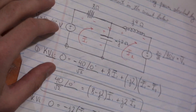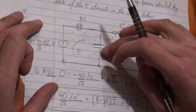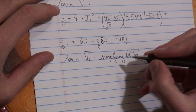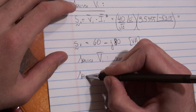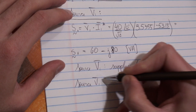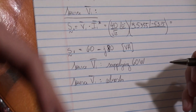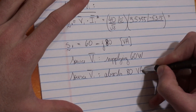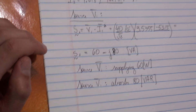That 60 watts can only go into the resistor, since the capacitor and the inductor do not dissipate real power. At the same time, the imaginary part is minus 80. Source V1 absorbs — the minus means absorbs — 80 volt-amperes reactive.